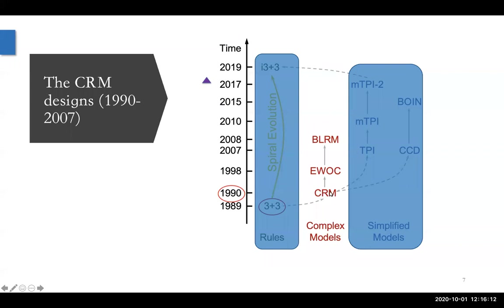The next phase would be the model-based designs, and we will definitely talk about the CRM, which is the most well-known one. With the CRM, there are also other developments over the past three decades, including the escalation with overdose control — EWOC. I also categorize BRRM, the Bayesian logistic regression method, as a design that uses complex models. Here 'complex' is relative — not really super complex compared to big data modeling, but relative to the ones using just very simple independent beta-binomial models. The 'complex' here means there's a dose-response curve, usually.